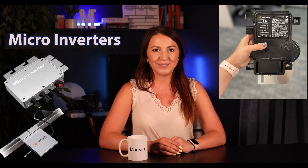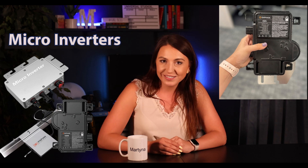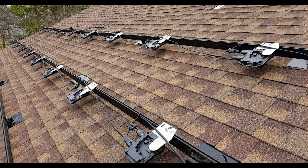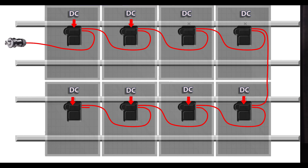Now, moving on to microinverters. A microinverter, as the name suggests, is a small inverter that is attached to each individual solar panel on the roof. It converts the DC electricity produced by that specific panel into AC electricity on the roof, independently from the other panels in the system.